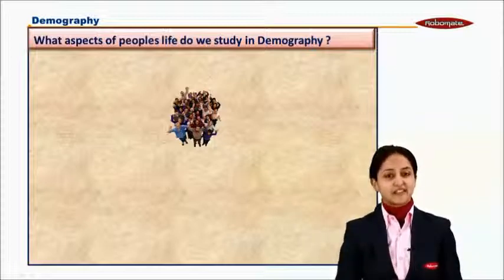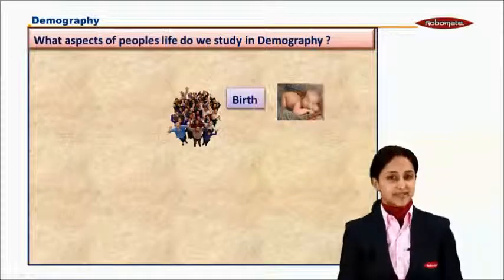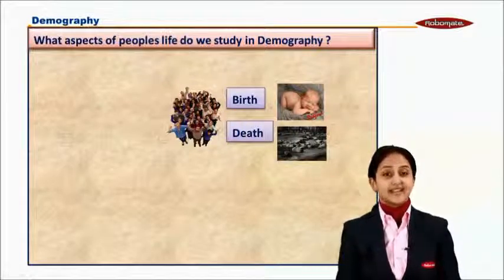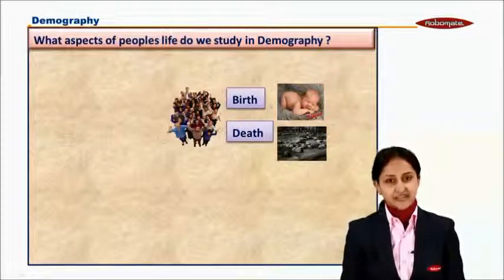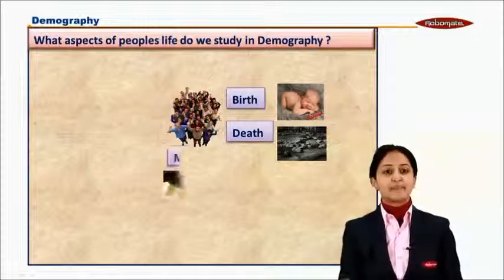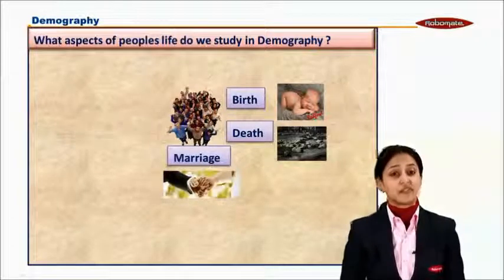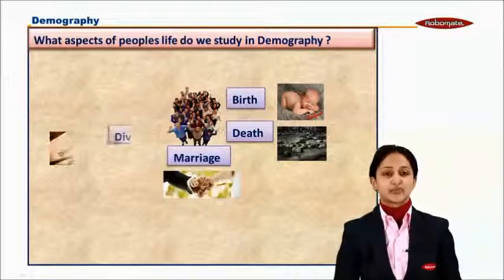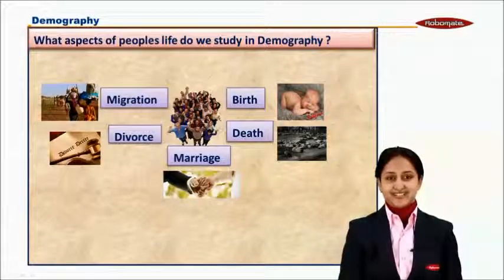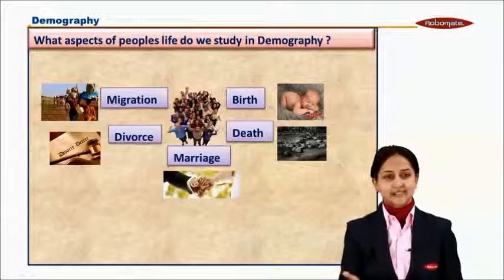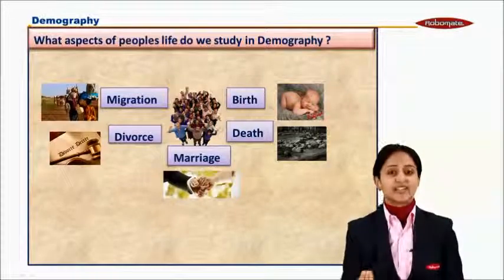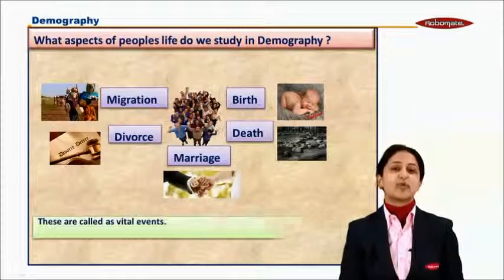Let's see the various aspects in the life of an individual. The first one being birth — definitely first we are born, that is when our life begins. And the last one being death — once we are born, we definitely have to die. But in between birth and death, there are many events which happen in our life. One of them being marriage. Then sometimes unforeseen events happen and we have to undergo divorce. The other aspect very important to the life of an individual is migration — people do migrate for career, for health reasons, to various countries and cities. So these five very important events in the life of an individual are called vital events.